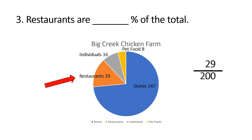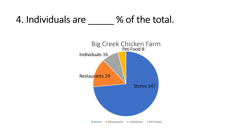We get 0.145 — move the decimal over twice and we get 14.5%. Next, individuals are what percent of the total? Individuals is 16 divided by the total number of clients, 200.